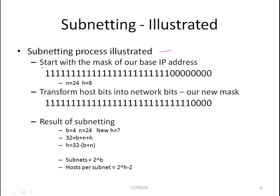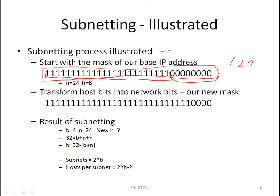The subnetting process illustrated: we always start with a base address and a base mask. Our address has a base subnet mask — here we have a base subnet mask of /24. 24 means we have exactly 24 network bits and 8 host bits. N represents the network bits and H represents the number of host bits before subnetting. Going through the process of subnetting consists of transforming host bits into network bits. Our base subnet is N equals 24. We've borrowed four bits, so B equals 4, and we have H equals 4 host bits left.